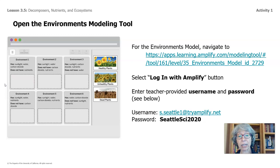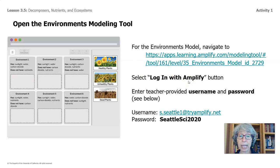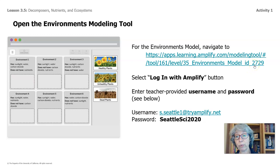If you don't have the packet, go ahead and pause the video. You might want to take a picture, if you have a phone, of the URL that's right here, or just use pencil and paper and copy it down. This will send you to the Amplify website and you'll need to log in. The username is here and the password — these are underscores. There's an underscore between 'environments' and 'model,' between 'model' and 'ID,' between 'ID' and '2729,' and also one between 'five' and 'environments.'